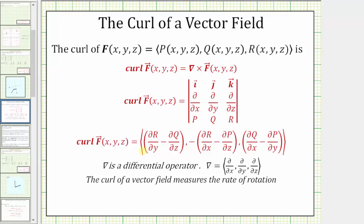If we're concerned about the curl of a vector field in two dimensions, the z component would be zero, so r would be zero, and all the derivatives with respect to z would also be zero. Looking at the formula, those terms become zero, and we're only left with the z component, which is a difference of two partial derivatives. That's why the curl of a two-dimensional vector field equals only the z component — and since the given vector field f is only in two dimensions, we express it as a scalar function rather than a three-dimensional vector.